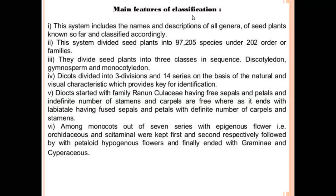The main features of this classification: The Bentham and Hooker classification includes names and descriptions of all genera of seed plants known so far. This system divided seed plants into 97,205 species under 202 families and orders.